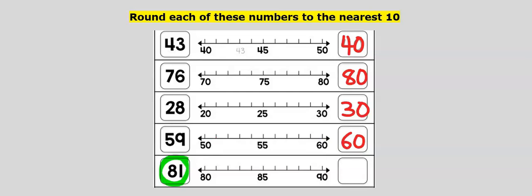81 is between 80 and 90. 81 is closer to 80 than to 90. Our answer is 80.